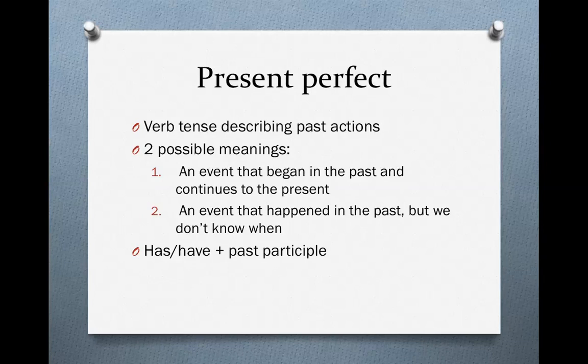Now we're going to talk about the present perfect. This is a verb tense that describes past actions. Even though it's called the present perfect, it's about events in the past. Always about events in the past. I introduced the past participle because you will need it to create the present perfect. The present perfect has two possible meanings.